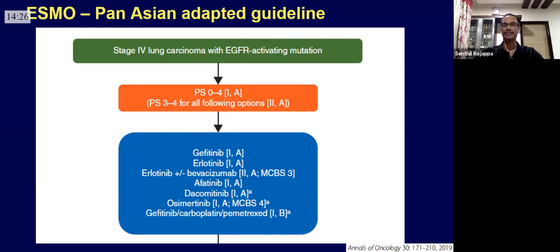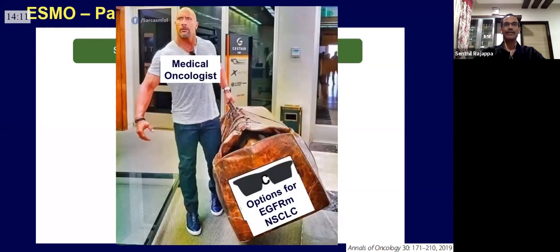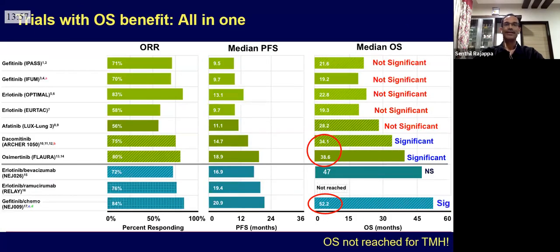This is the most recently published pan-Asian adapted guideline. The options for anybody who has an EGFR mutant lung cancer are listed — there are seven options. As a medical oncologist going through these options, they are getting longer and heavier, so let's try to dissect through some of this data in the next 10 to 15 minutes.